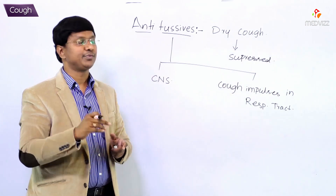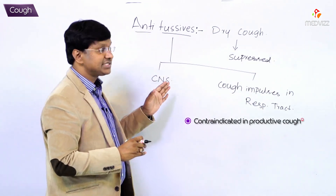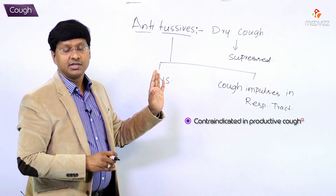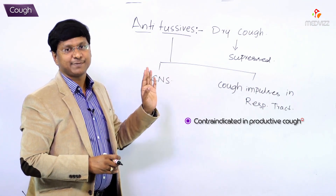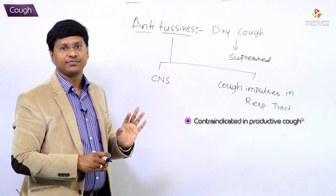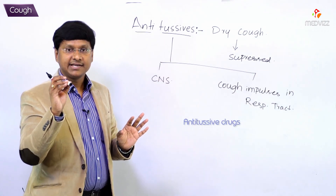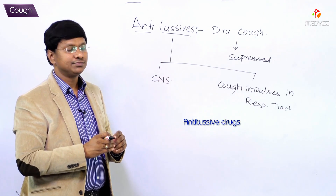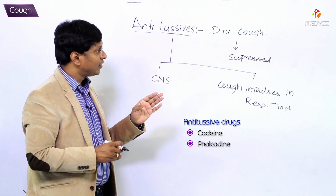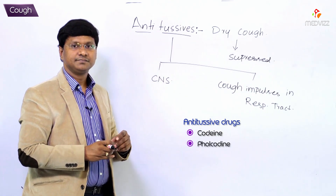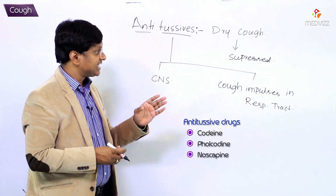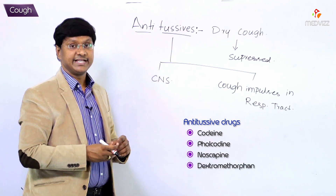These drugs should be used only in dry cough — this is a very important point. They should not be used in cough with expectoration. The antitussives include codeine, pholcodeine, noscopine, and dextromethorphan.